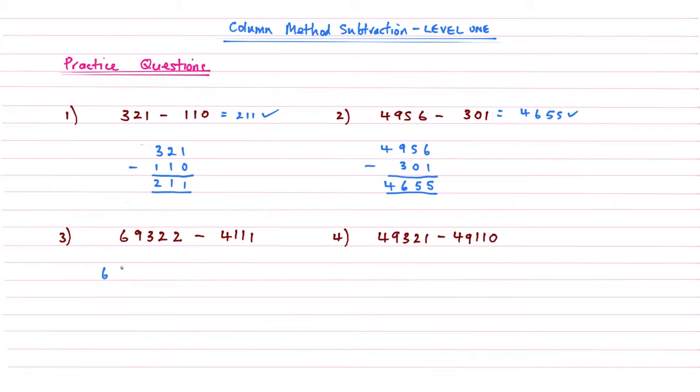Question number 3, slightly longer example. For the first number 69,322 subtract 4,111. Notice that in all these examples I've left enough space in between our numbers so we can do something with it. What we do with it will become apparent in later levels, but if we get into the habit of leaving gaps in between those numbers now, it'll make it a lot easier later on.